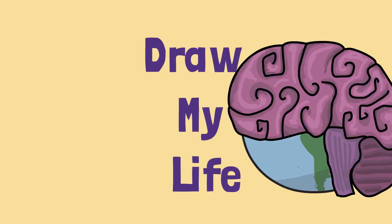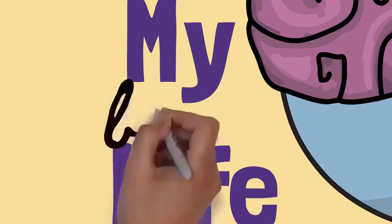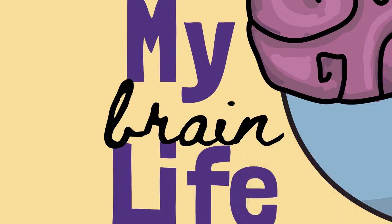These neurons typically communicate with one another by means of long fibers called axons, which carry trains of signal pulses called action potentials to distant parts of the brain or body targeting specific recipient cells.